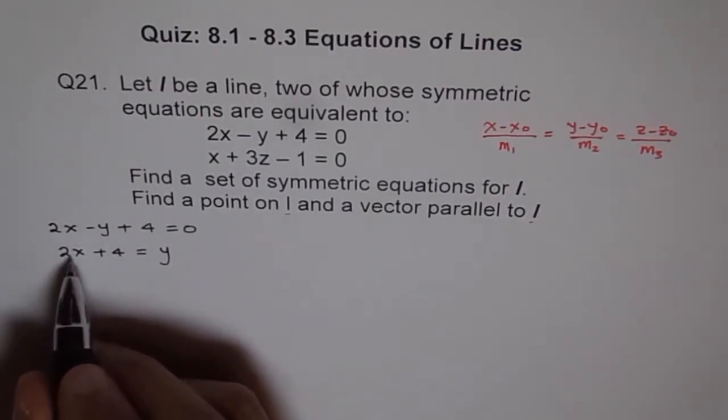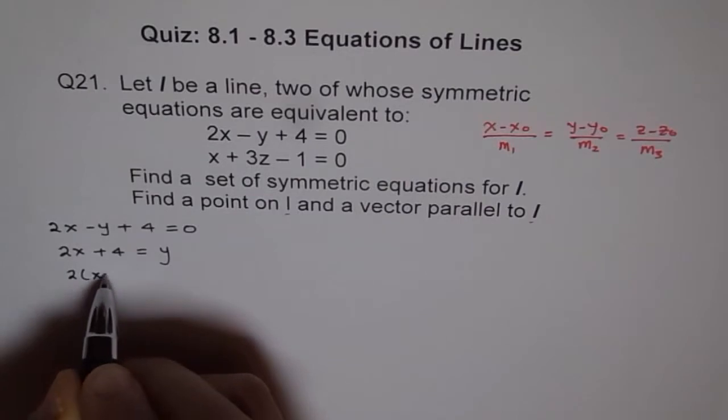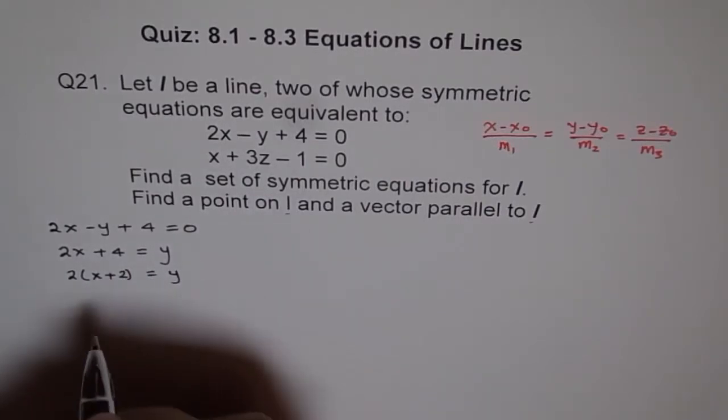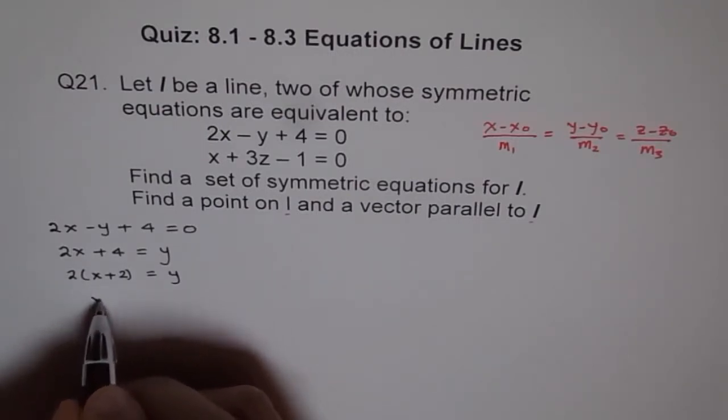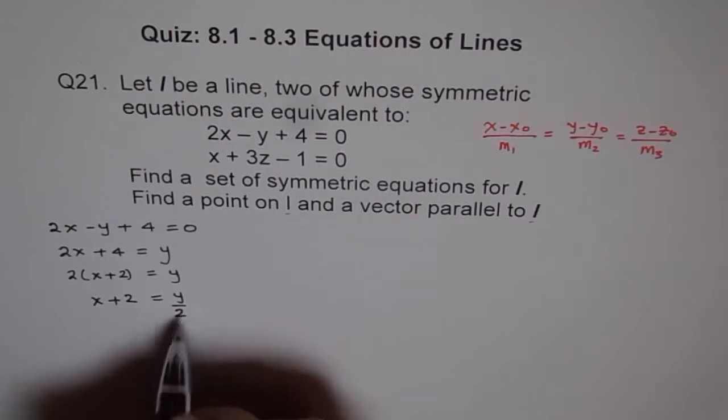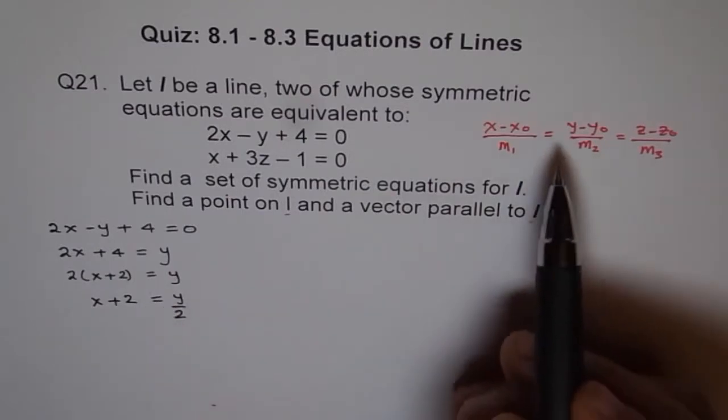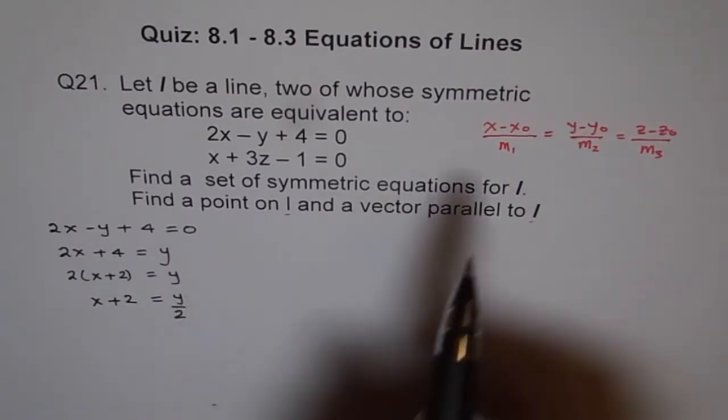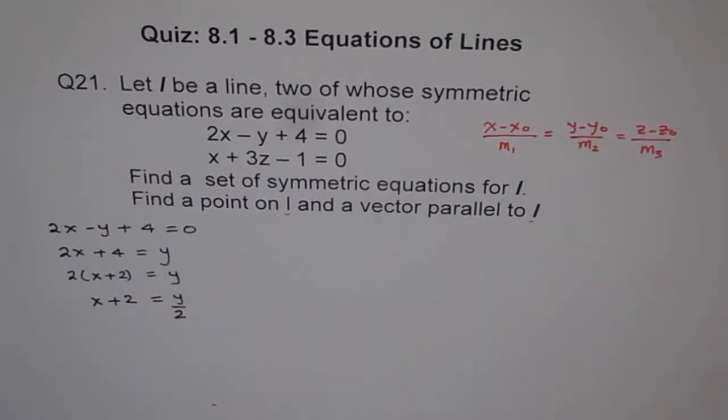We bring it to this side. So we say 2x plus 4 equals y. We can factor out 2 from here. If we factor out 2, we get 2 times x plus 2 equals y. And if we divide by 2, then we get x plus 2 equals y over 2. Now that looks familiar.